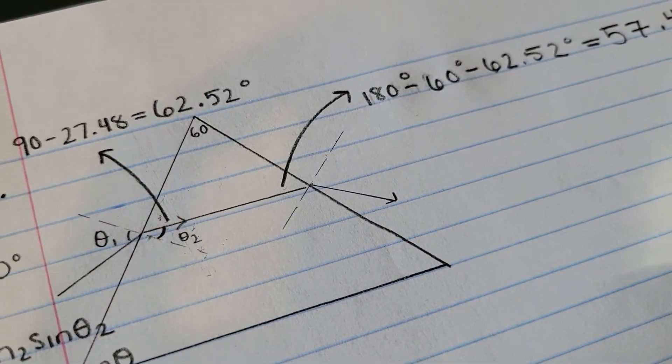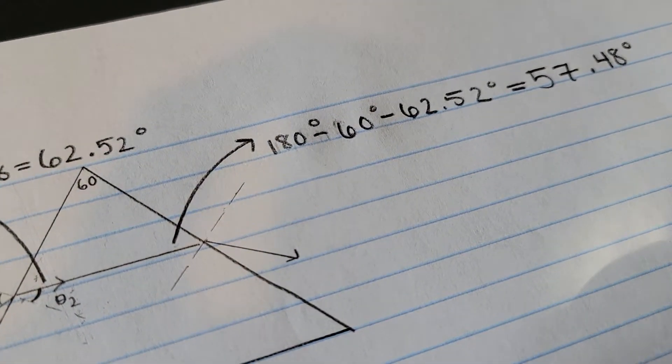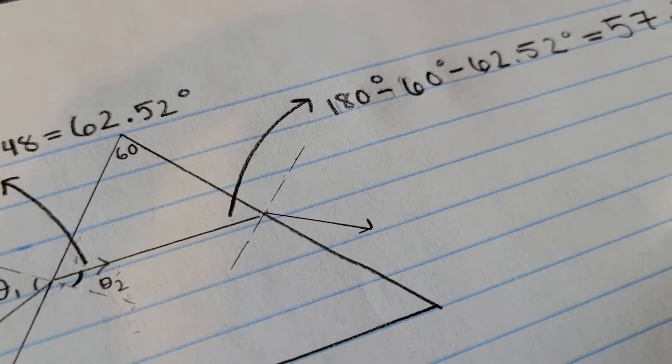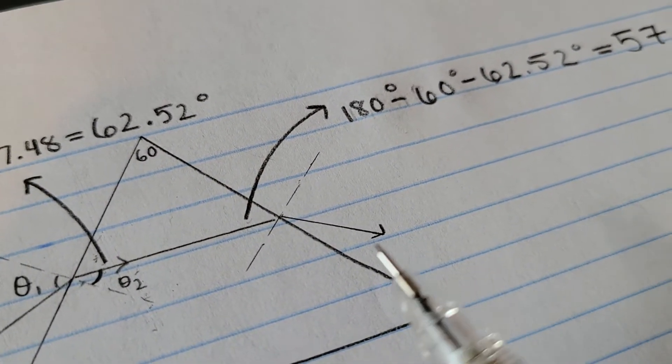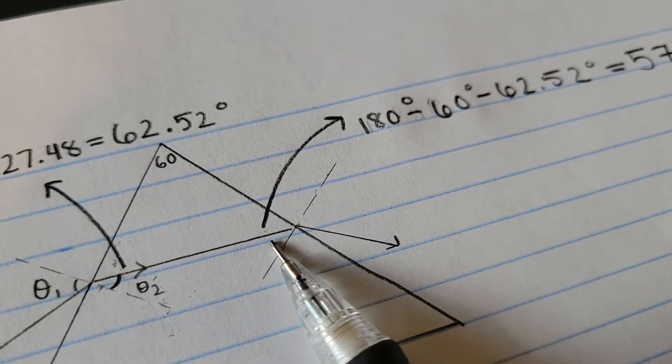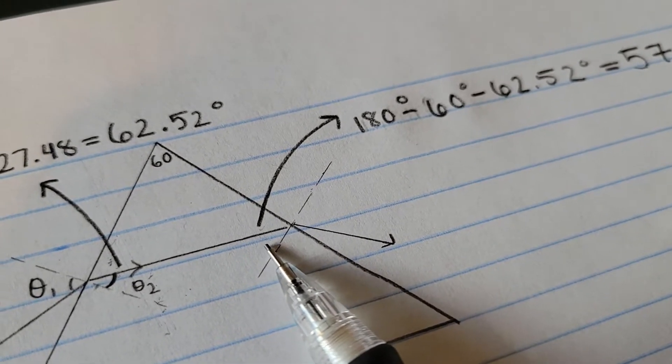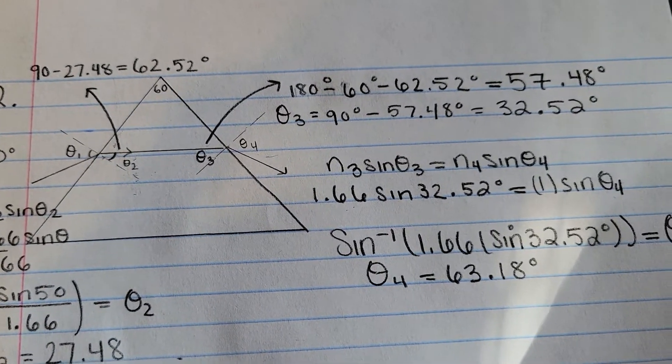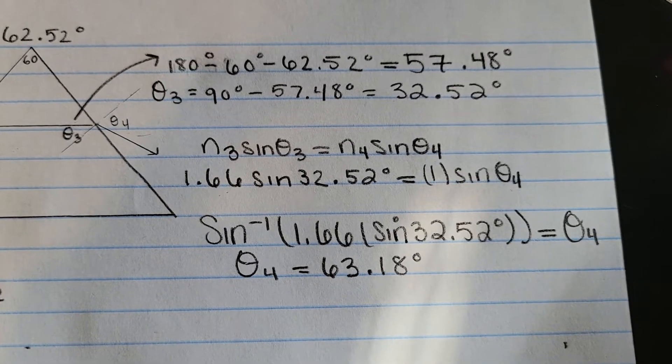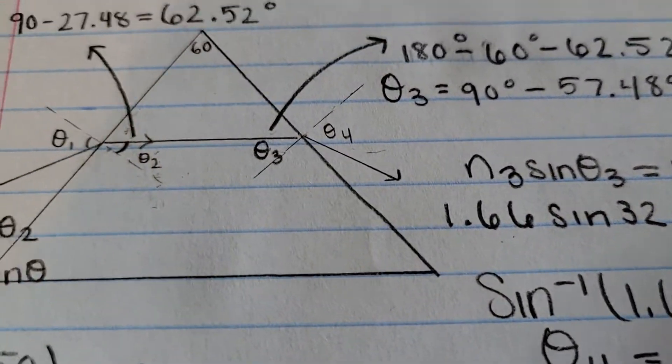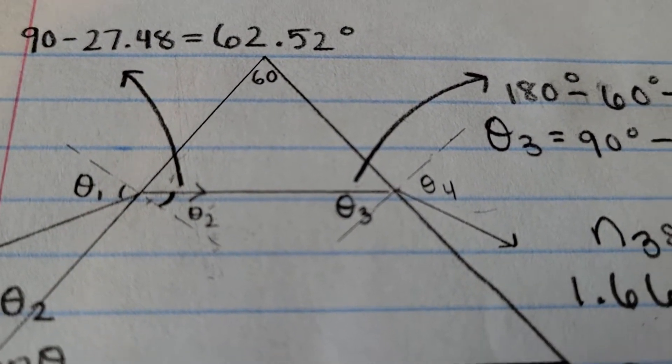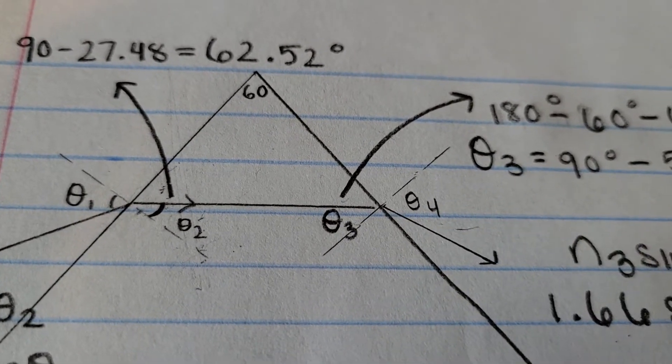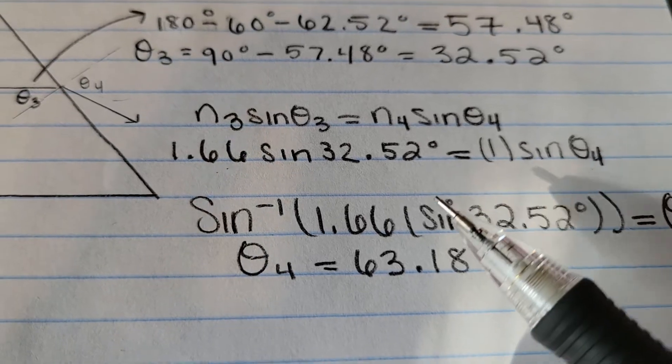Now, since you know this angle, the 57.48, you can subtract that by 90 and you'll get this angle right here. And we can use this angle to get the final angle over here. Okay, so basically what I did is I just labeled this angle as theta 3 and this angle as theta 4. So that's why they're labeled this way.